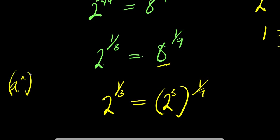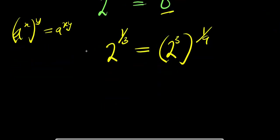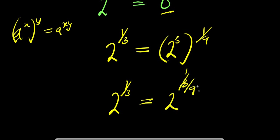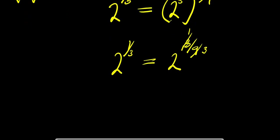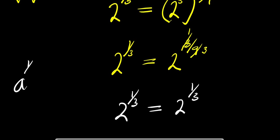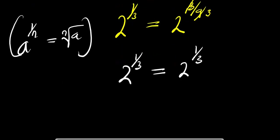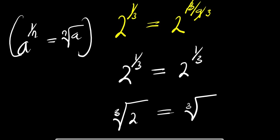Now, since 8 is 2 power 3, the right side becomes (2 power 3) power (1/9). Using the rule a power x power y equals a power x times y, that gives 2 power (3 times 1/9) equals 2 power (3/9) equals 2 power (1/3). So we have 2 power 1/3 equals 2 power 1/3, and since a power (1/n) equals the nth root of a, both sides equal the cube root of 2.